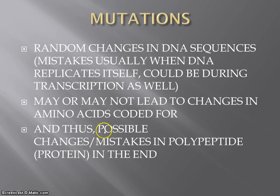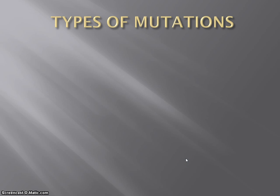If we change the amino acids, we can change our protein in the end, which may or may not lead to problems. Let's take a look at some of these. There are a couple of basic types we want to examine. The first one is the easiest: a substitution.